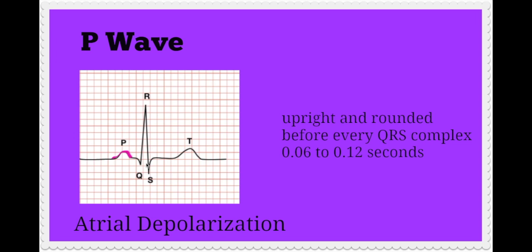When assessing a P wave, it should be round and upright, come before every QRS complex, and be between 0.06 and 0.12 seconds in duration.